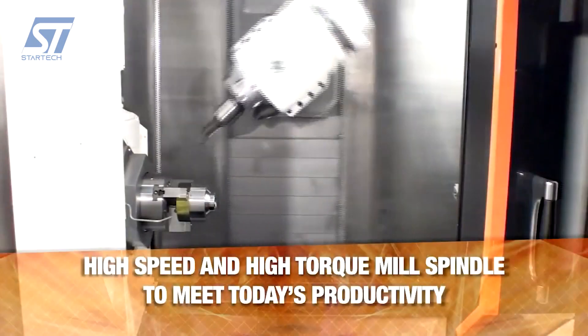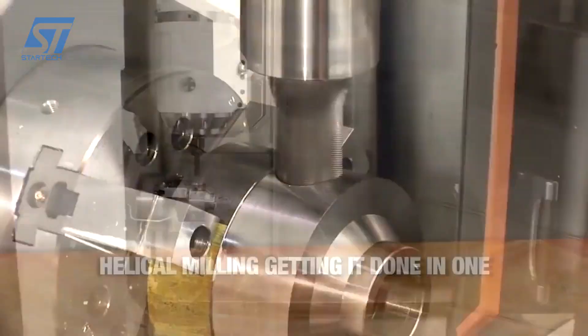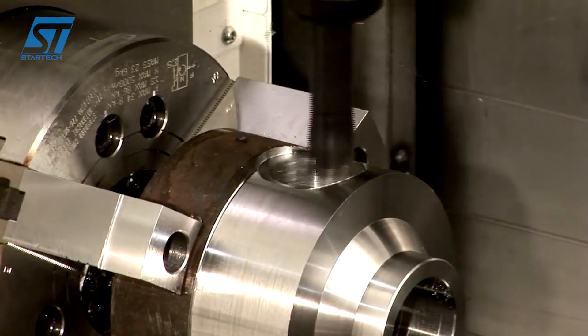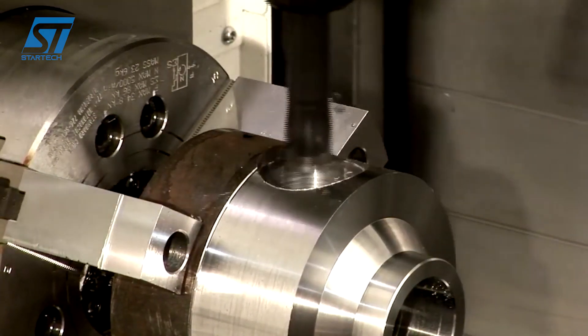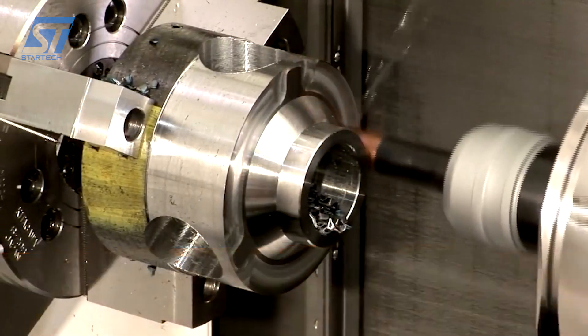The Integrex i200S seamlessly combines the capabilities of a powerful turning center and a full-function machining center. This means it can perform a wide range of operations, including turning, milling, drilling, tapping, and even deep hole boring, all in one machine.